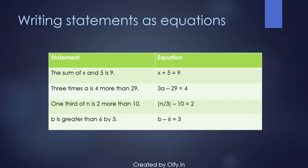The second one is 3 times a, which is 3a, is 4 more than 29. That means the difference between 3 times a and 29, when you take 29 away from 3 times a, the result is 4. So similarly, that's how you write it: 3a minus 29 gives you 4.